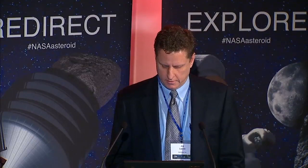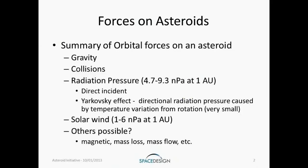We started by looking at the forces on asteroids. In summary, we looked at gravity, collisions, radiation pressure, solar wind, and other possible forces such as magnetic effects, mass loss, and mass flow. We're going to focus on the radiation pressure and solar wind pressure. Radiation pressure is comprised of two components: first is the direct incident component, and second is the Yarkovsky effect — a directional radiation pressure caused by temperature variation from rotation, acting on a rotating body due to a difference in the direction of absorption and re-emission of radiation.